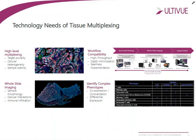AltaVue started off looking at the field of multiplexing technologies and wanted to provide an alternative solution to what was currently available. Here are the four tenets that we believe all multiplexing technologies should offer for your consideration. The first is high-level multiplexing — what this means is that you want to be able to do multiplexing across a wide variety of samples using a wide variety of markers.